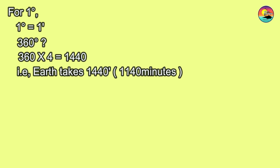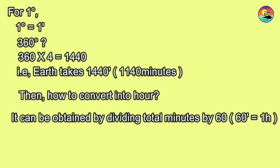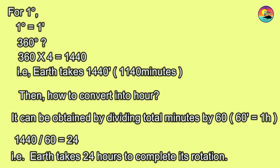Now let us see how to convert into hours. It can be obtained by dividing the 1,440 minutes by 60. That is, 1,440 divided by 60 is equal to 24 hours. Therefore, it takes 24 hours to complete one rotation.